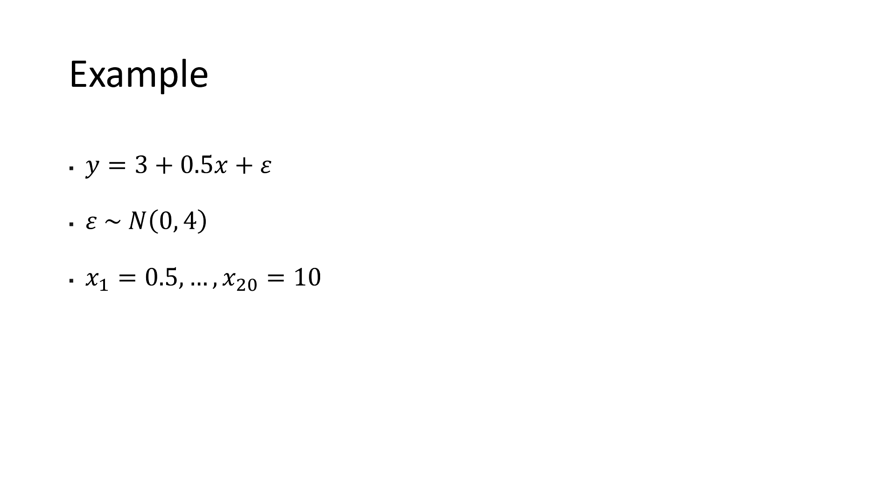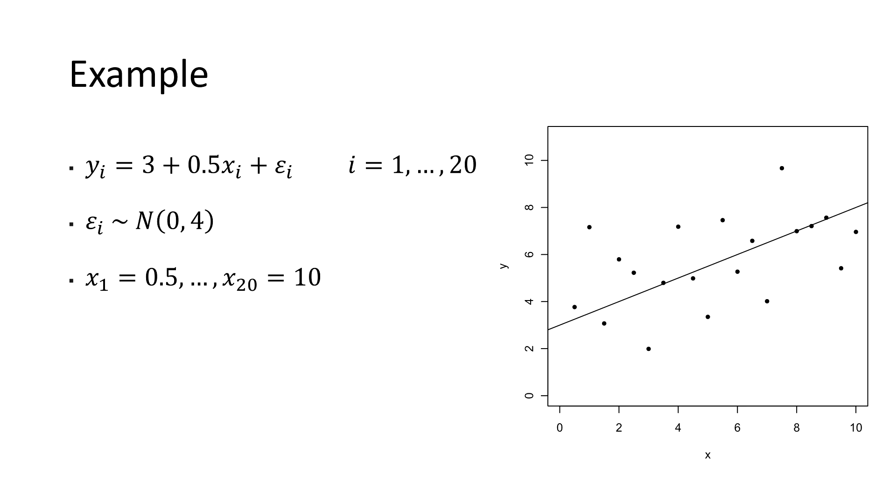To represent these different observations in the model equation, we usually add a subscript i to all variables. The i is simply a placeholder for the different observations. For example, we can calculate y1, the y value of the first observation, by plugging in the x value of the first observation, which is 0.5. This way, we can calculate all y values and obtain this scatter plot right here, where the underlying linear relationship is indicated by the black line. We can see that the line intercepts the y-axis at 3, which is the reason why we call beta0 the intercept.